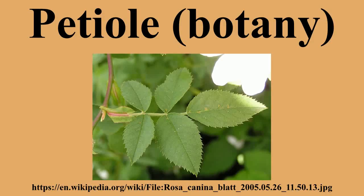In botany, the petiole is the stalk that attaches the leaf blade to the stem. The petiole is the transition between the stem and the leaf blade. Outgrowths appearing on each side of the petiole in some species are called stipules. Leaves lacking a petiole are called sessile or apetiole.